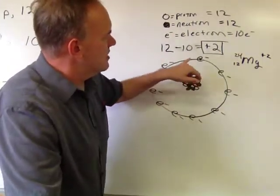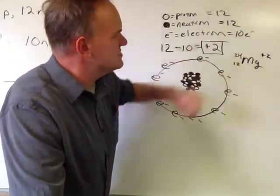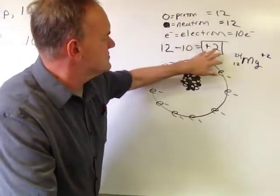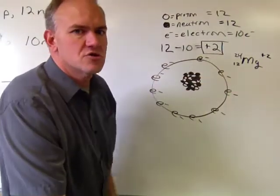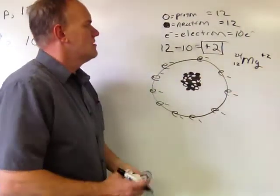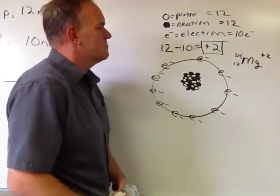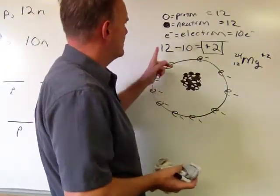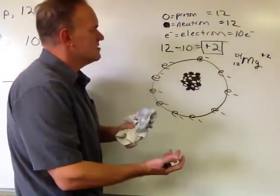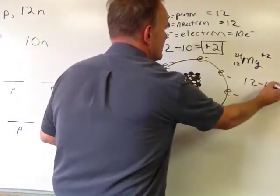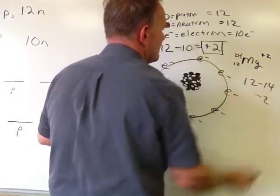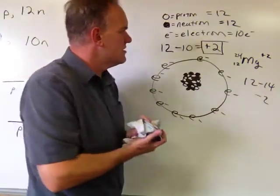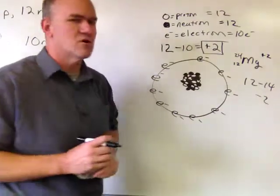Now, if we gave this 2 more electrons, of course, then we would have 12 minus 12 is 0. It would have no charge. It would not be an ion. Or, if instead we gave it 4 electrons, we could say, well, now it's 12 minus 14. And so 12 minus 14 would give us a negative number. And so that would have a charge of negative 2. But those aren't what happened here. We had a positive charge.